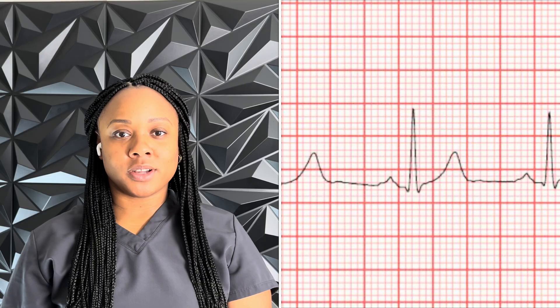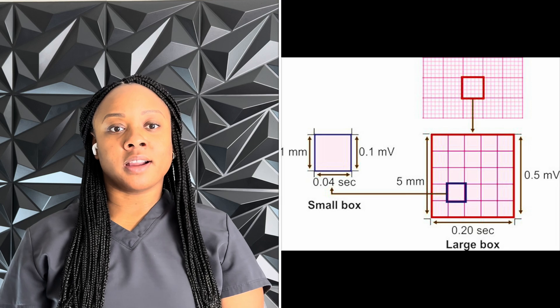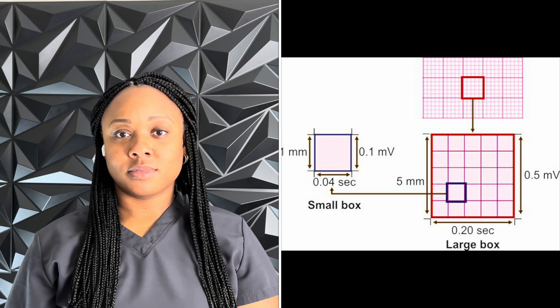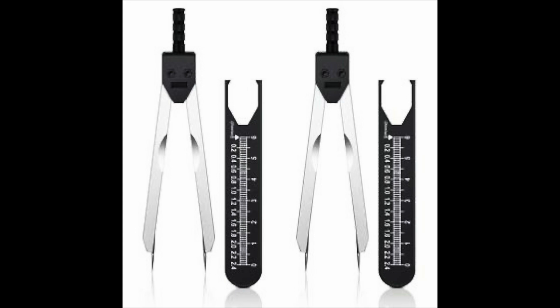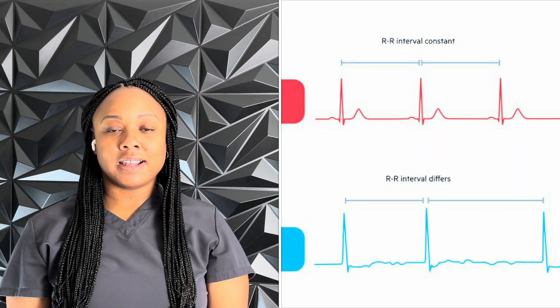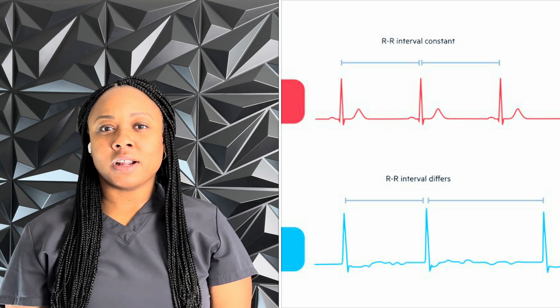Now let's break down the famous EKG strip. EKG paper is like graph paper — it moves at 25 millimeters per second. Each small square is 0.04 seconds, and every big square is 0.20 seconds. Most jobs have calipers that will measure these for you, but you'll need to know how to read this for a paper and pen test. You'll use those boxes to measure how fast the heart is beating, how long the QRS complex is, and how far apart everything is. If the distance between each beat is consistent, you've probably got a regular rhythm — but if the spacing is all over the place, it's time to dig deeper.